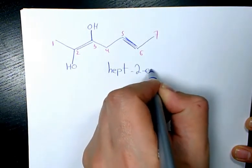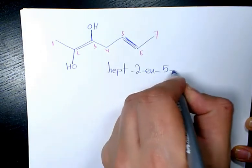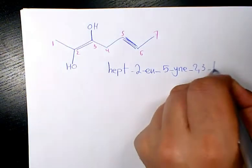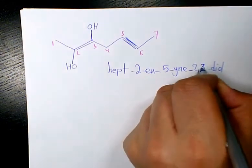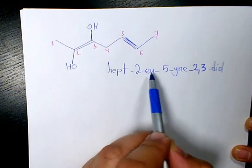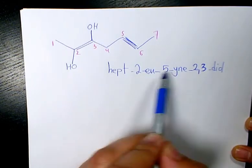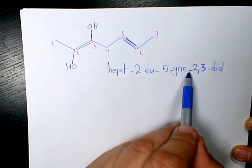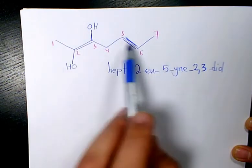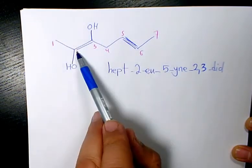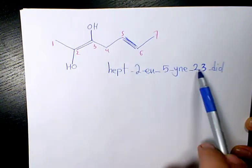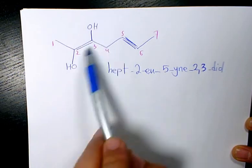Two-en-five-yn-two,three-diol. That makes sense, right? Because 'e' comes before 'y' alphabetically, so the 'ene' has to come before 'yne'. Hept because we have seven carbons, 'two-en' because the double bond is at position two, 'five-yn' for the triple bond at five, and 'two,three-diol' for the two hydroxyl groups. That is the name of this organic compound.